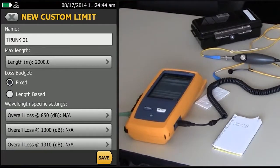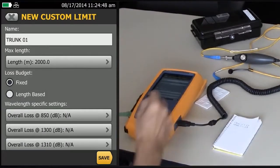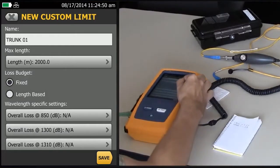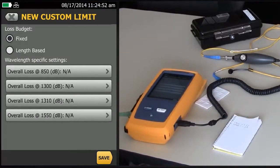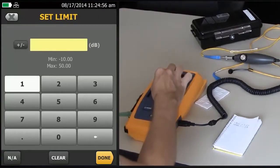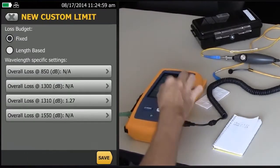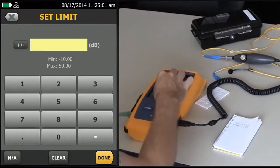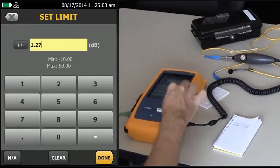We've actually got a fixed loss for this one. It's specifically 1.27 at both wavelengths. So when we change it to fixed, we just get simply the option to enter in those losses. So I'll tap 1310, 1.27, done. 1550, 1.27, done.